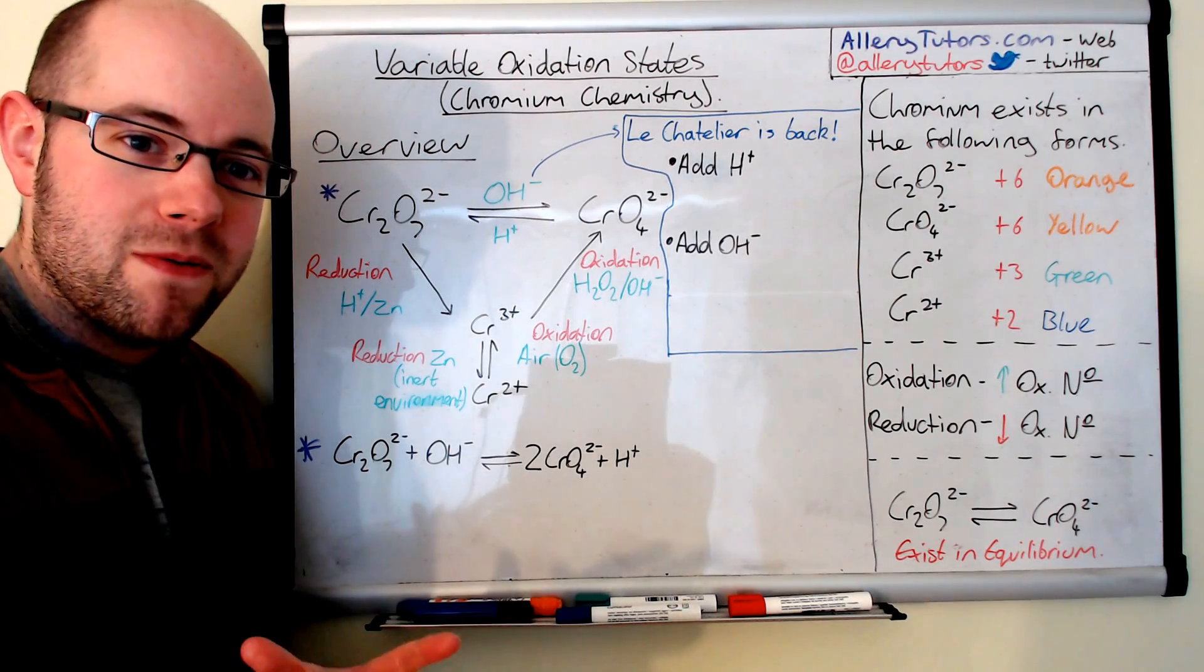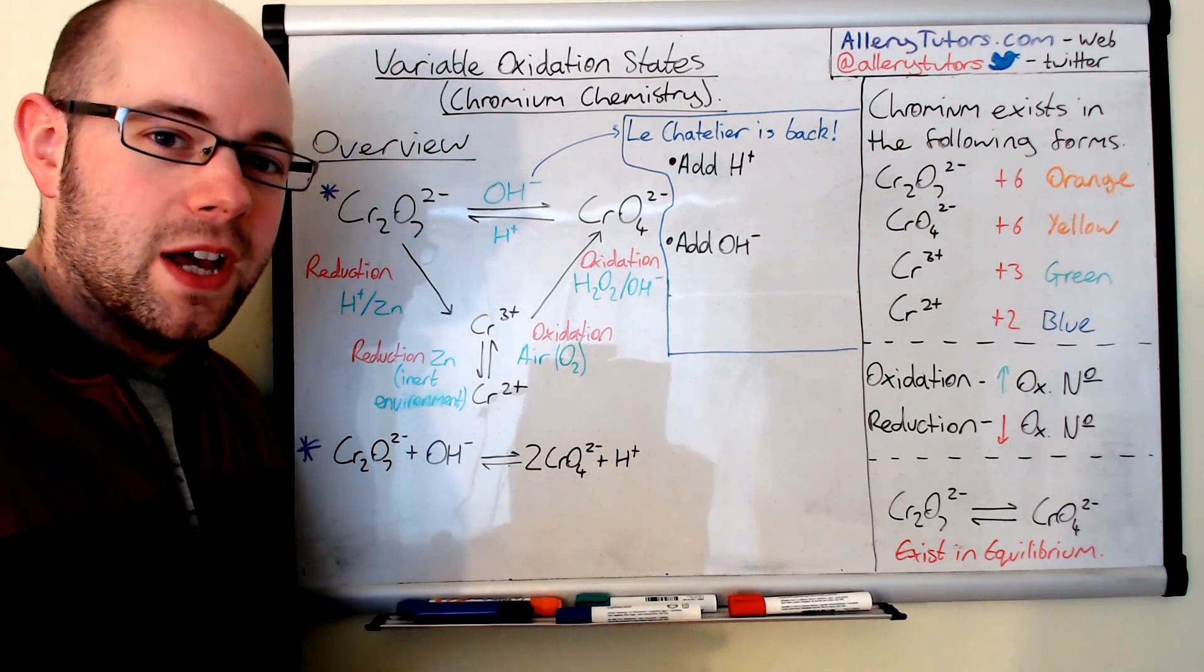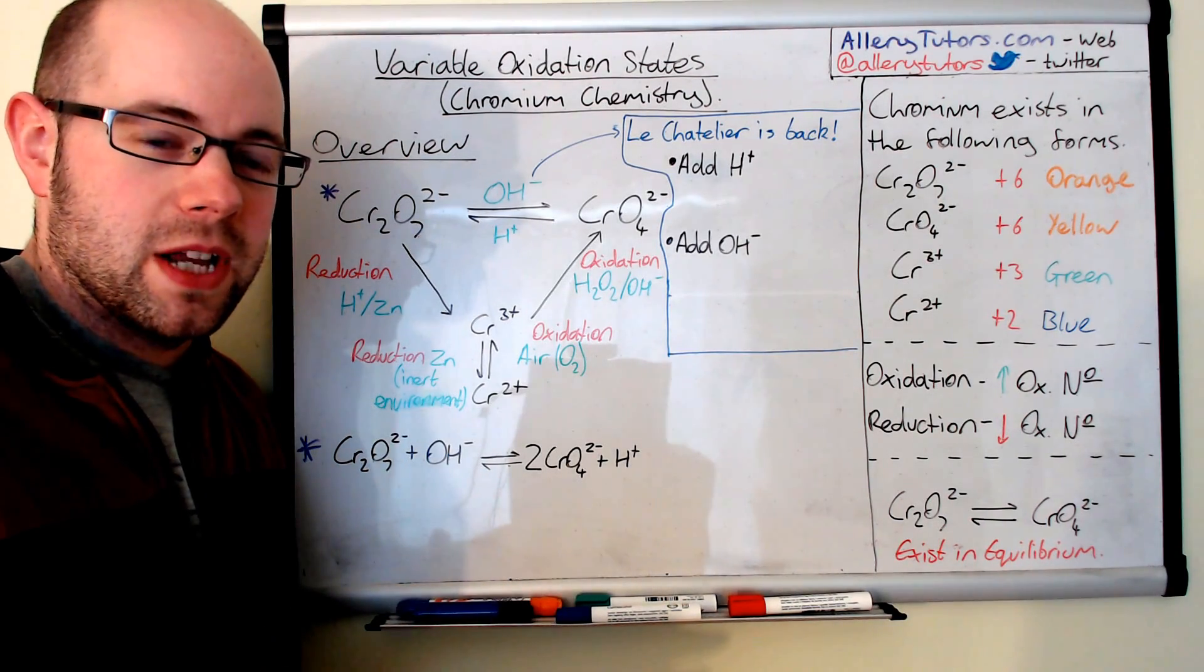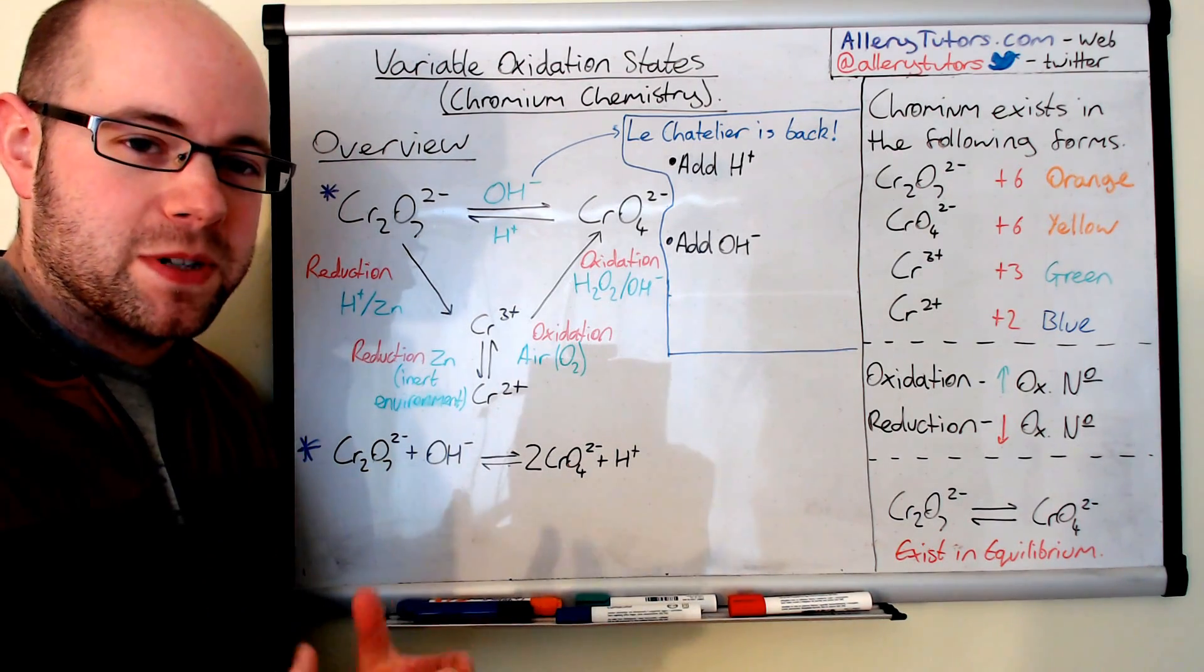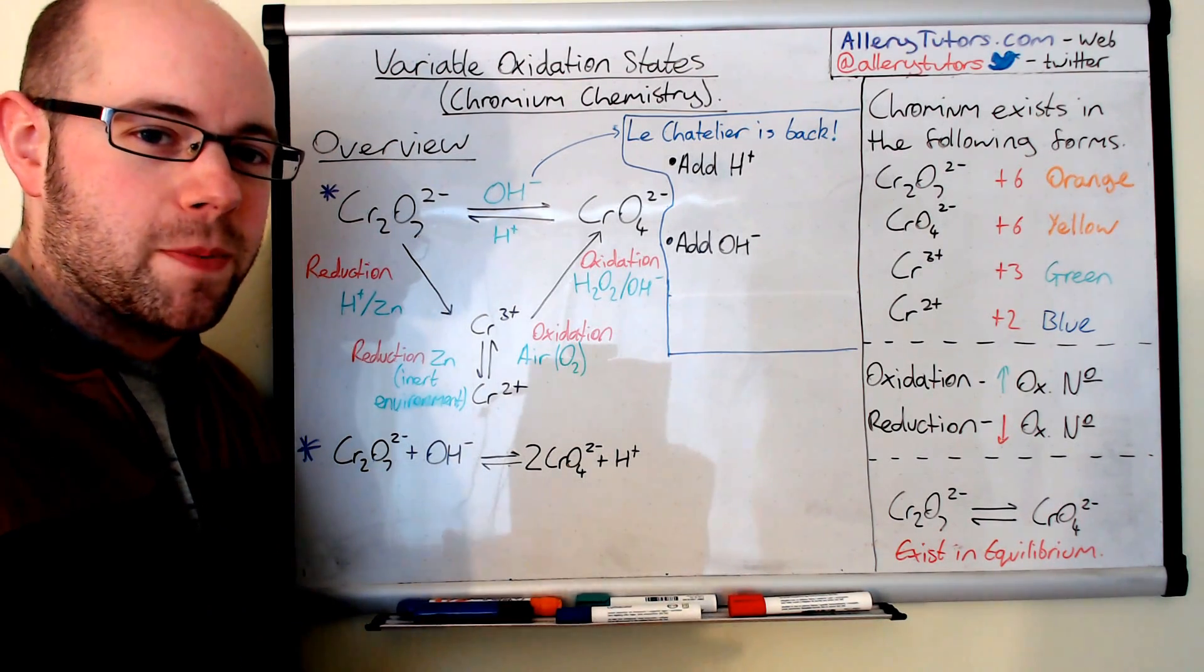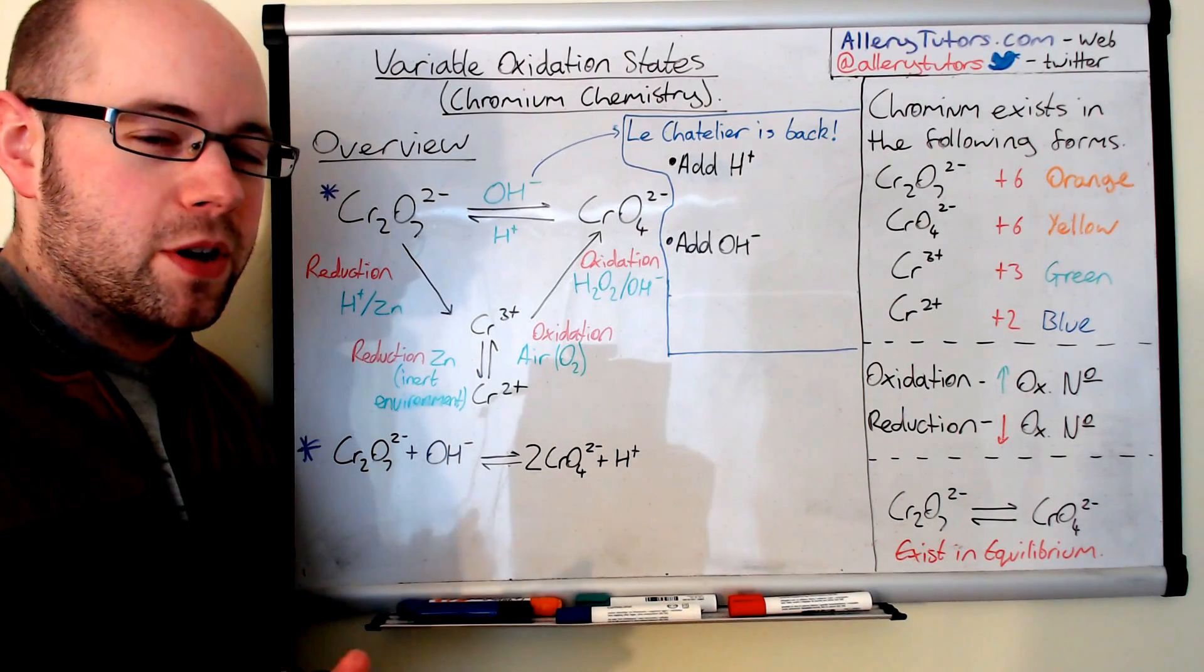If you can remember that one of the main features of transition metals is that they have variable oxidation states and we're obviously going to look at chromium in this particular video although you do need to know about cobalt and copper but they'll be in other videos.